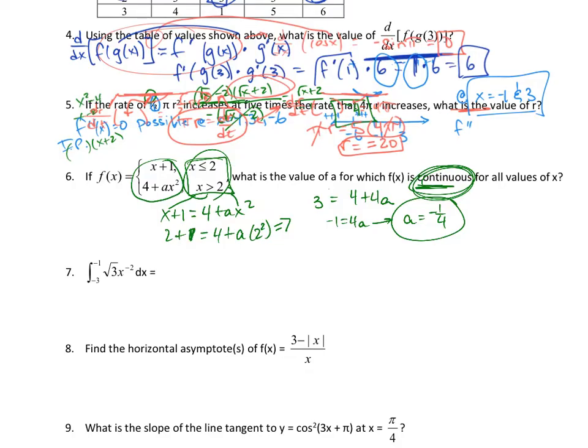Number 7 asks us to integrate from negative 3 to negative 1 of root 3 times x to the negative 2. This integral, we've got root 3, and if we try to guess and check at that, we move it up, we're adding a power, so it would be negative 1. So if I multiply, this would have to be a negative out in front, and now I've got it on the bounds from negative 3 to negative 1. I plug that in, I get negative root 3 times negative 1 to the negative 1 minus negative root 3 times negative 3 to the negative 1. And this ends up being root 3 minus root 3 over 3, which is 2 root 3 over 3.